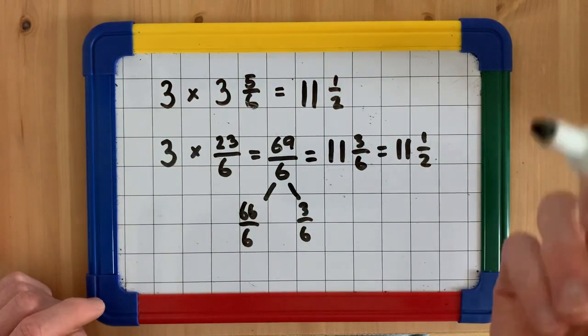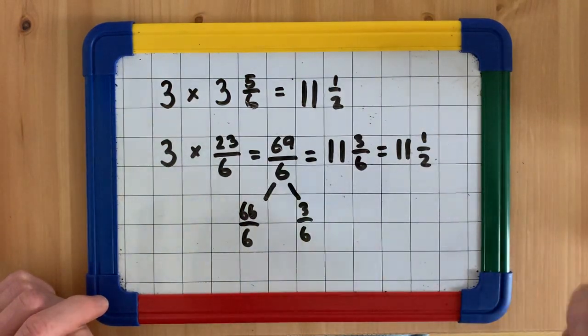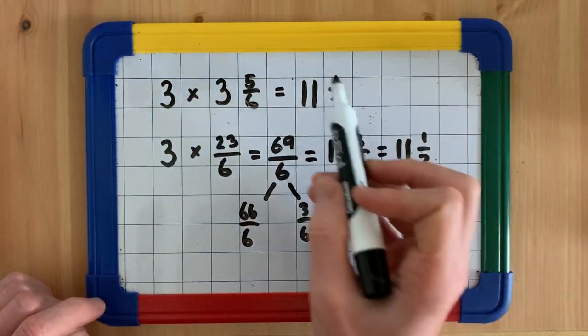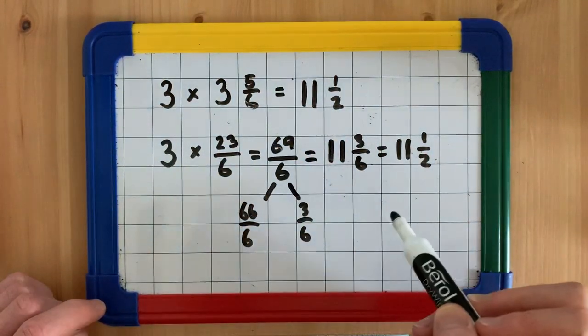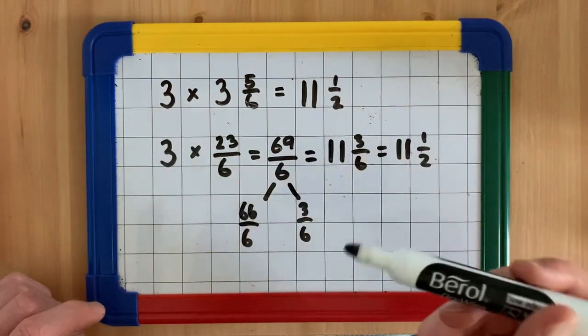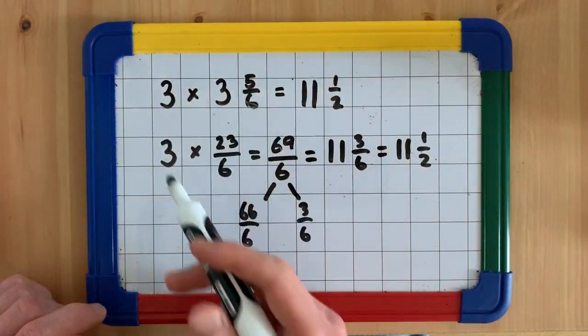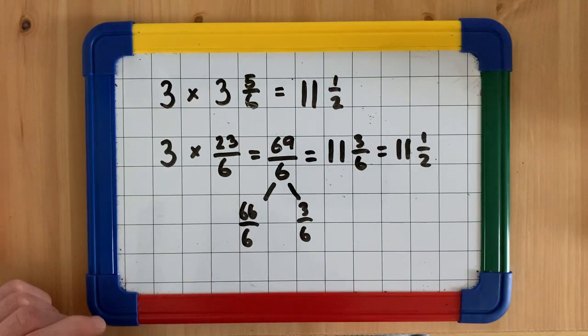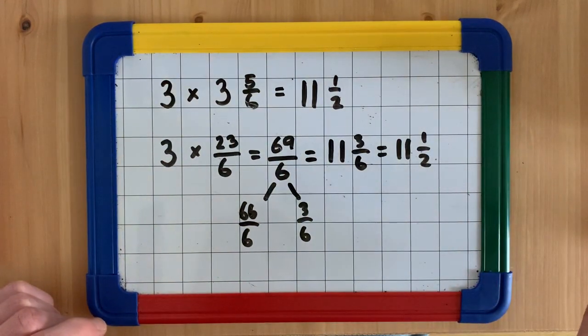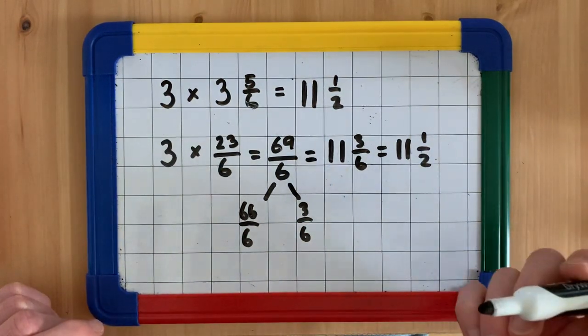Now, you can use whichever method you prefer. However, I find the partitioning method simpler, more straightforward. The improper fraction method means that you have to be really secure with your times tables and really quick with them. This method provides more opportunity for you to make a mistake. So I prefer the partitioning method, but it's up to you to choose which method you prefer and use that one.